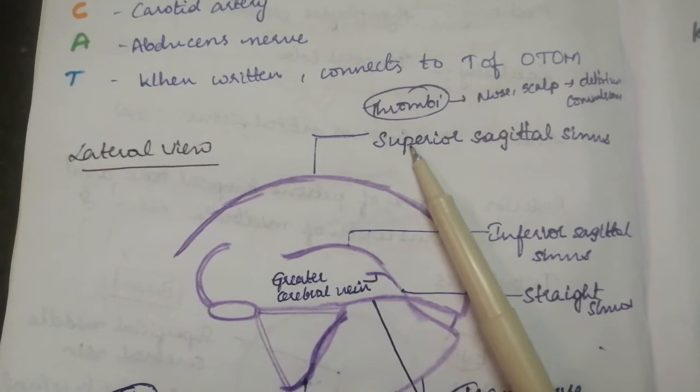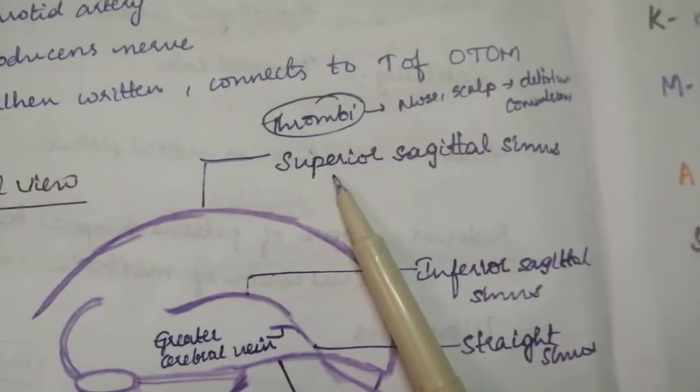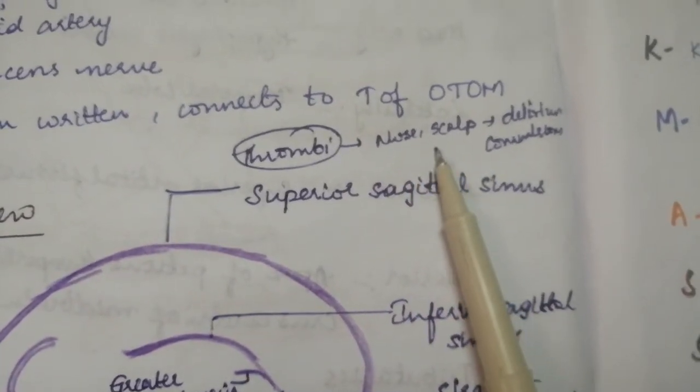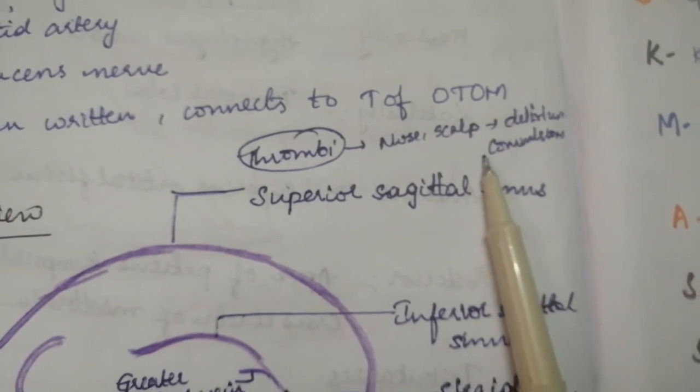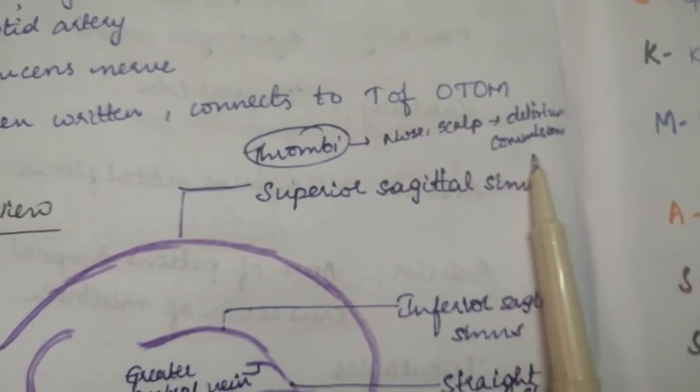Any thrombi to the superior sagittal sinus or obstruction to the nose, it results in delirium and having convulsions. That is your fits.